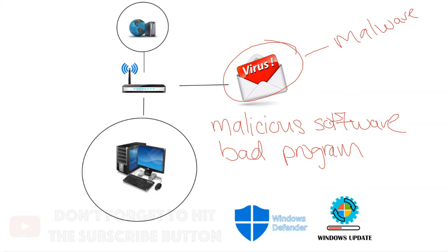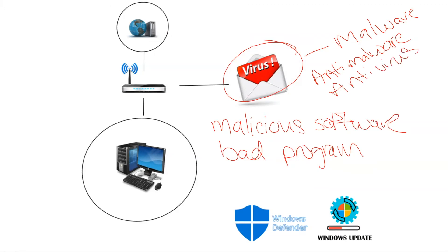One thing we can do to keep malware off of our systems and devices, including our phones, is installing some type of antivirus or anti-malware. These tools scan our computers for viruses. Anytime we download something it's scanning, and if it's malicious it will either ask if you want it to block it, or it will delete it from your computer.